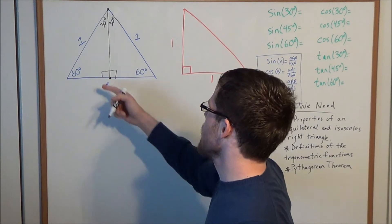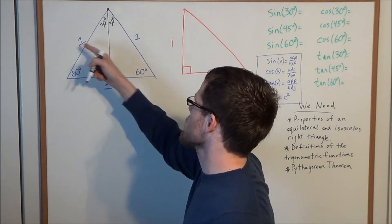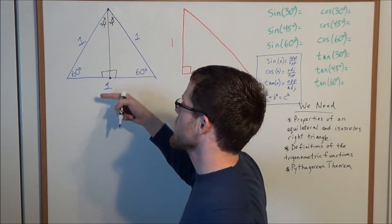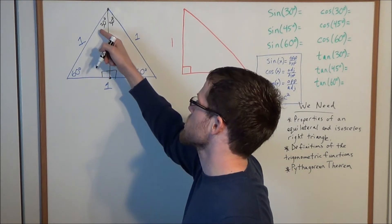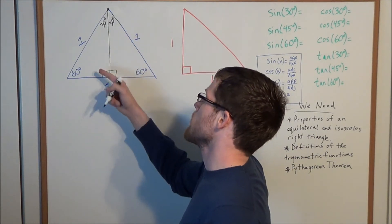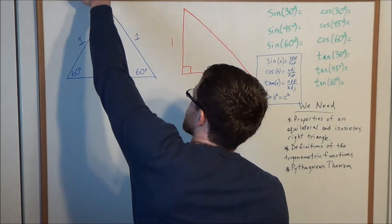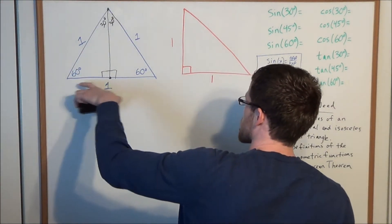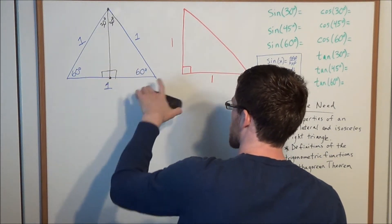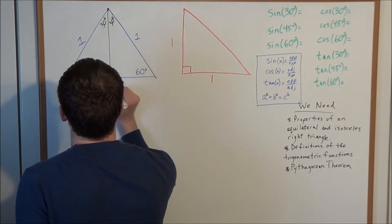A quick explanation would be hypotenuse-leg: both of these triangles have the same hypotenuse of one and they share the same leg, so these two triangles are congruent, meaning these two angles have to be the same — 30 plus 30. Similarly, the base angle is split into 90 plus 90. Since this side length is one and the two triangles are congruent, these two base segments are each one half.